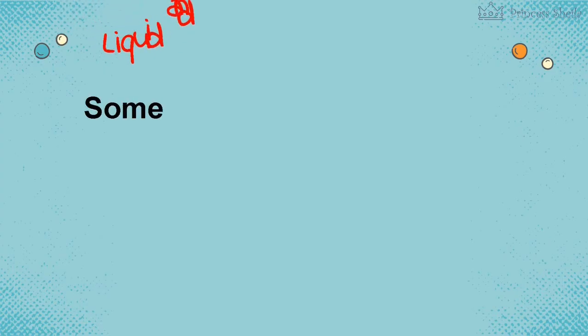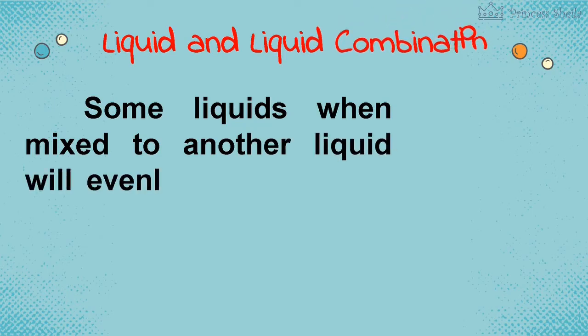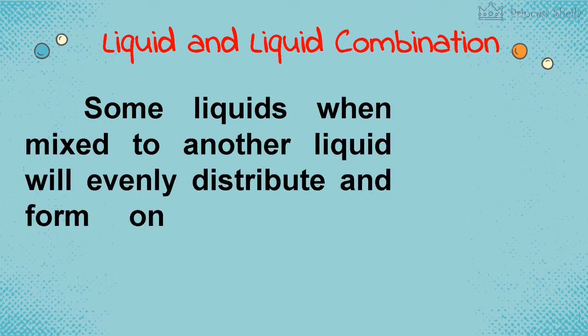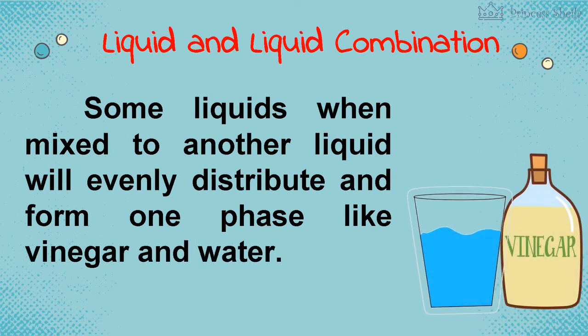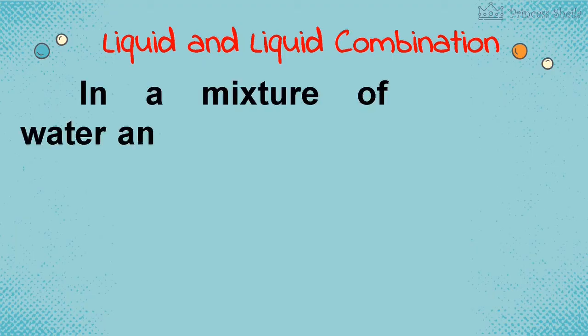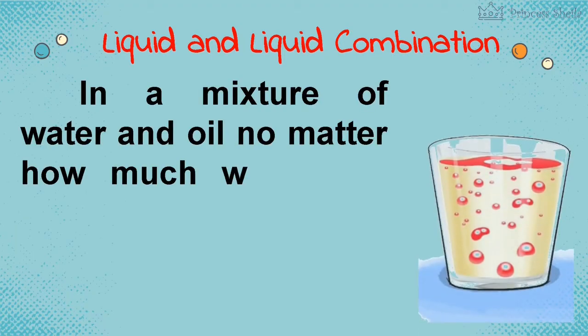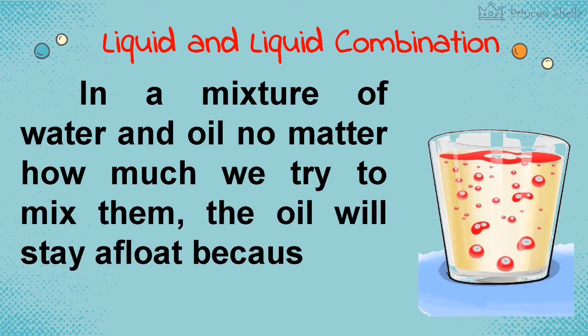Liquid and liquid combination. Some liquids when mixed to another liquid will evenly distribute and form one phase like vinegar and water. But, in a mixture of water and oil no matter how much we try to mix them, the oil will stay afloat because it is less dense than water.